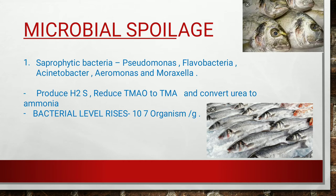These saprophytic bacteria produce H2S gas. The trimethylamine oxide (TMAO) present in the fish body is reduced to trimethylamine (TMA). Urea, a non-protein compound in fish, is converted into ammonia. The bacterial level rises when there are 10 to the power 7 organisms per gram, at which point spoilage occurs.